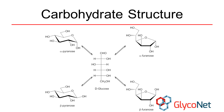Sugar molecules are more frequently found as rings, as opposed to open chains. In solution, the linear molecules exist in an equilibrium with six-membered ring forms called pyranoses, and five-membered ring forms called furanoses. The exact ratios of pyranose, furanose, and open chain forms vary according to the sugar and the solvent, but the six-membered pyranose rings are almost always preferred. If you think back to introductory organic chemistry, you'll notice that they can adopt a chair conformation.